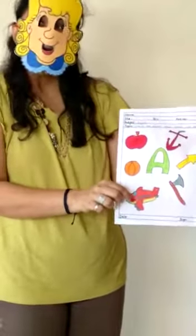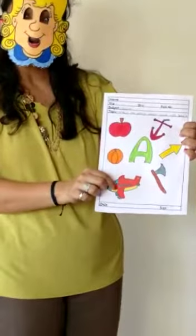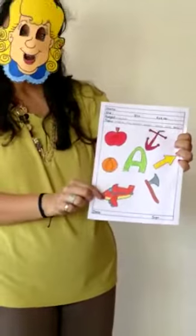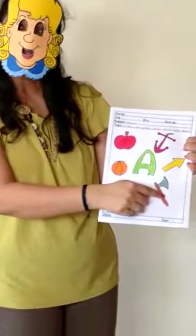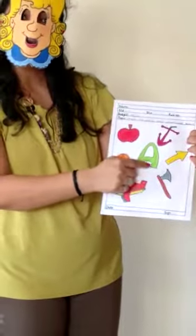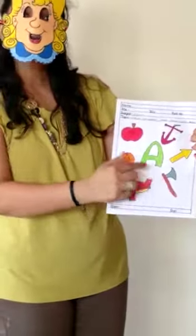This is an aeroplane. This you will match it with letter A. It starts with letter A. And this is an axe. You have to match it with letter A. This also starts with letter A.